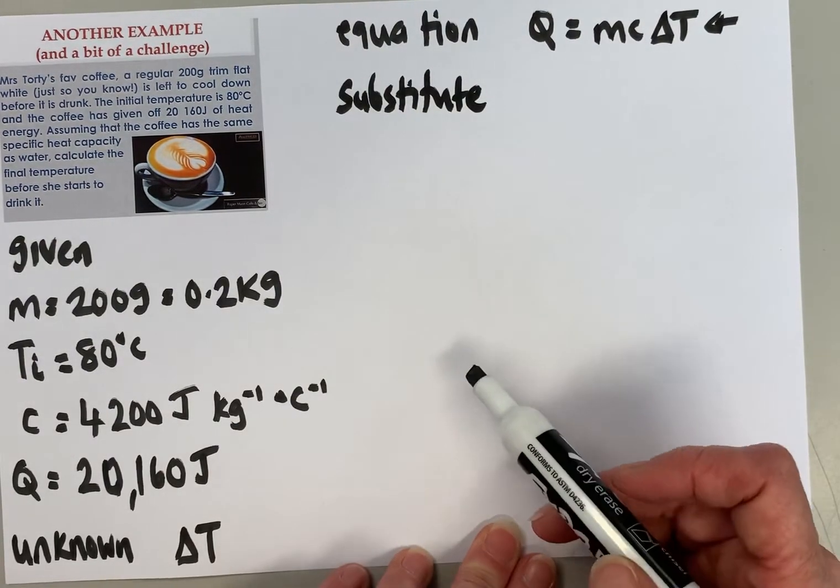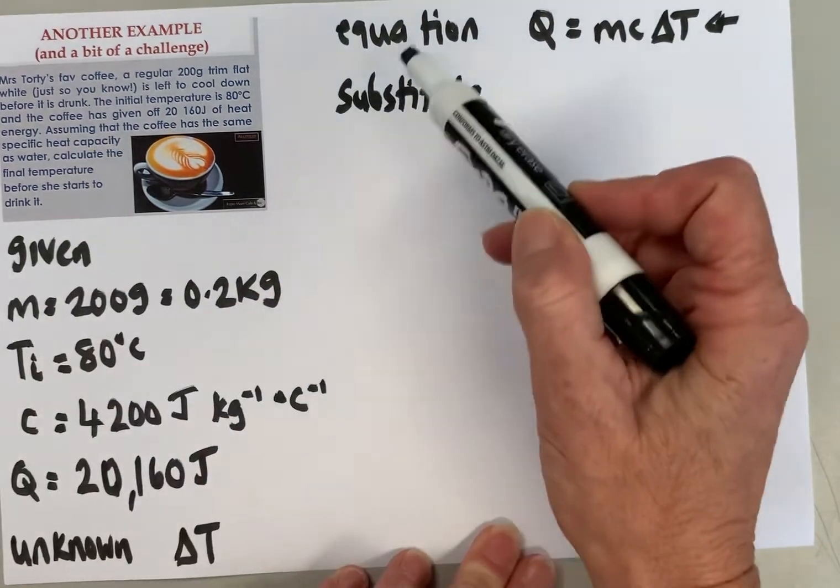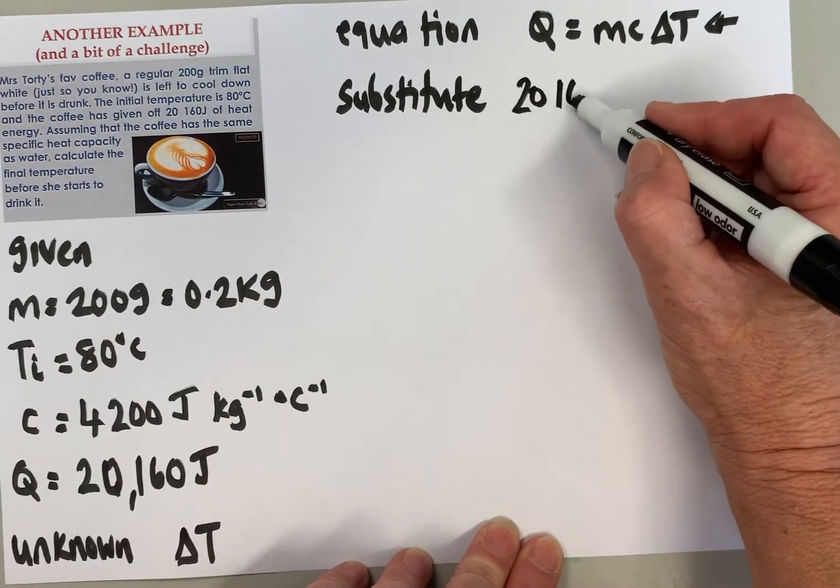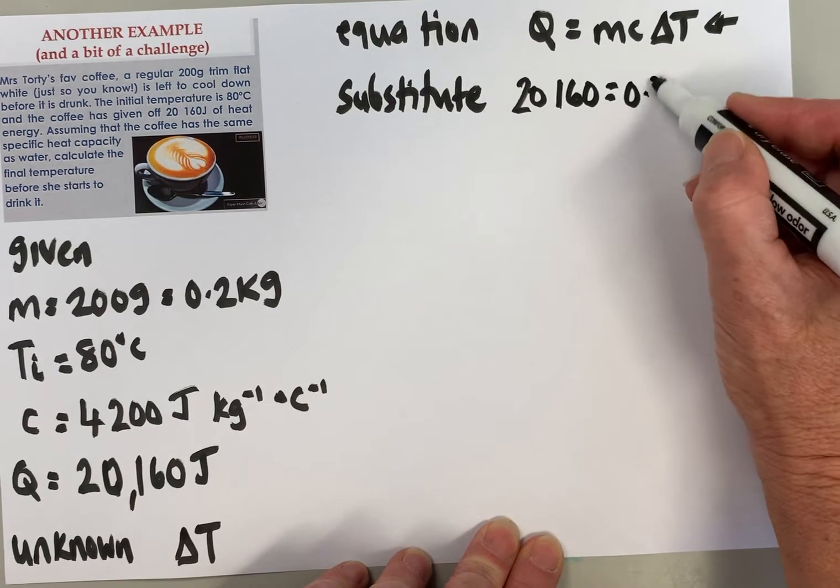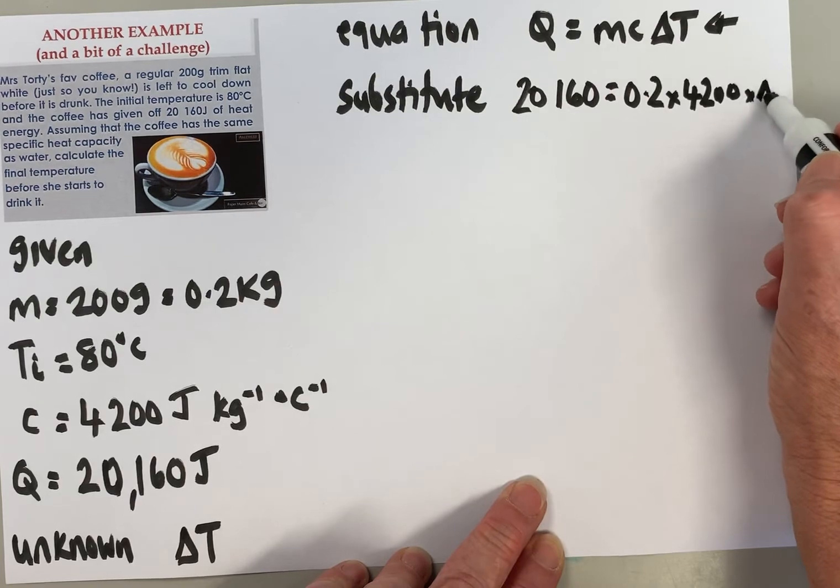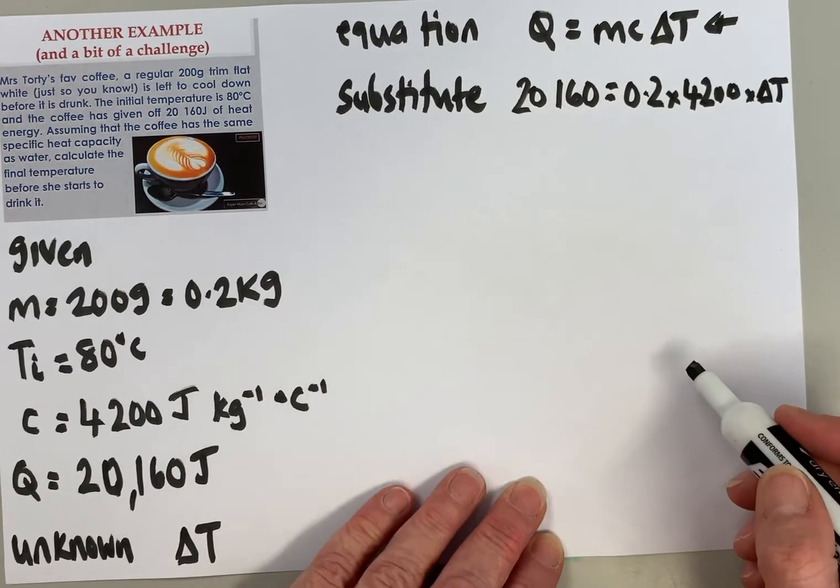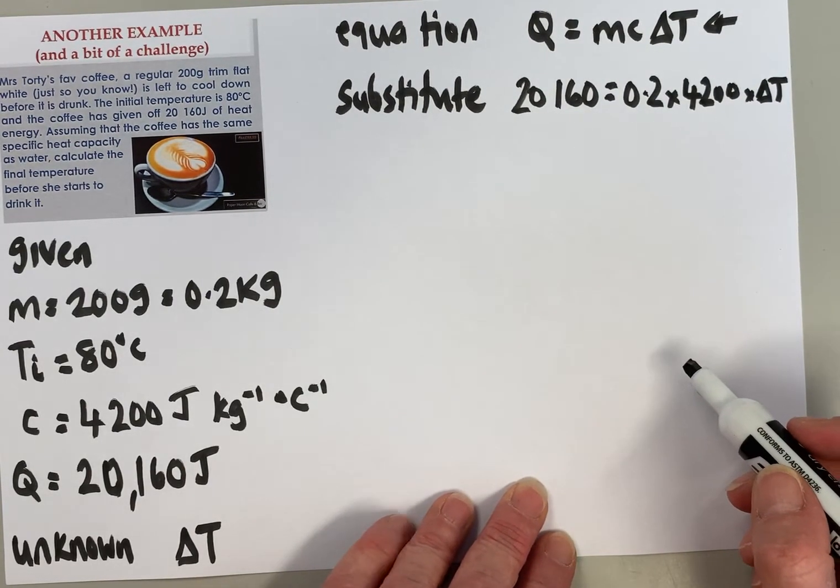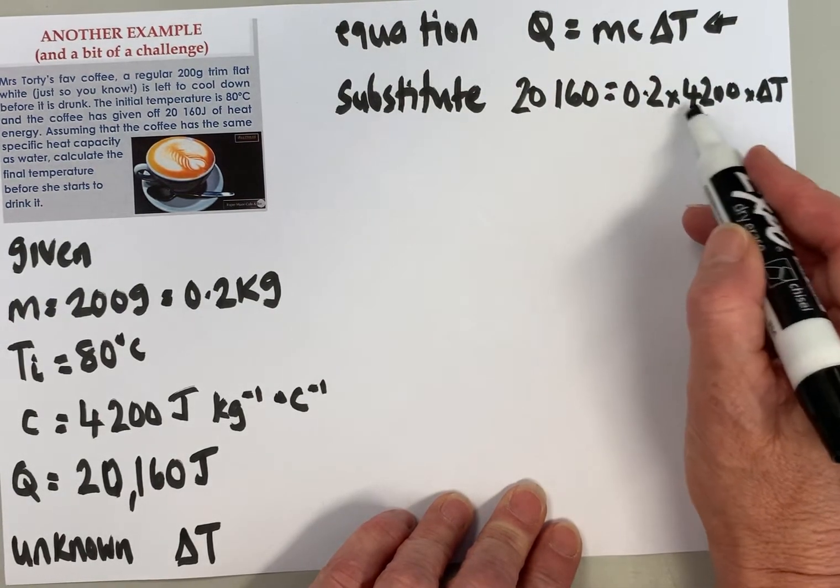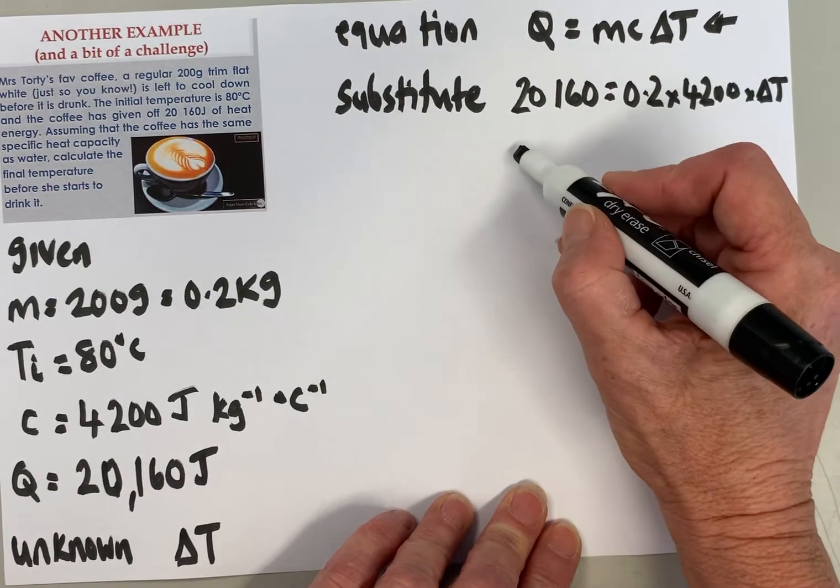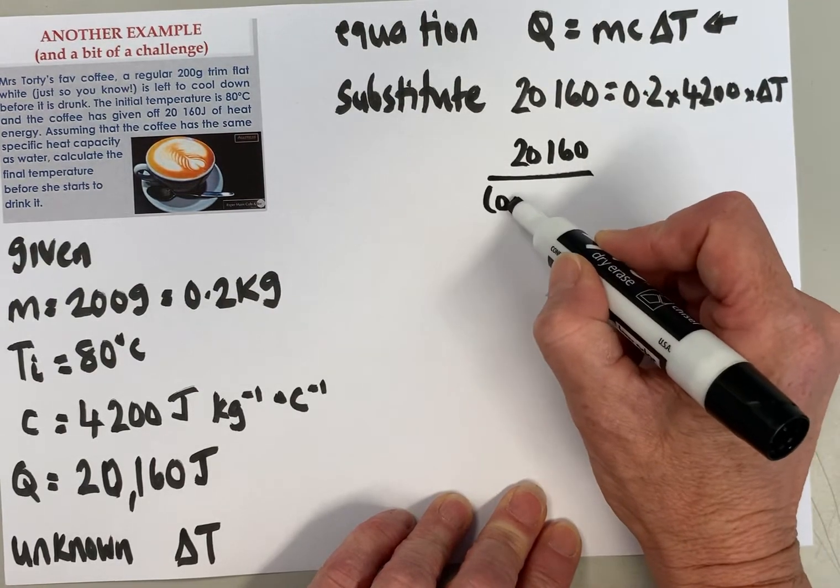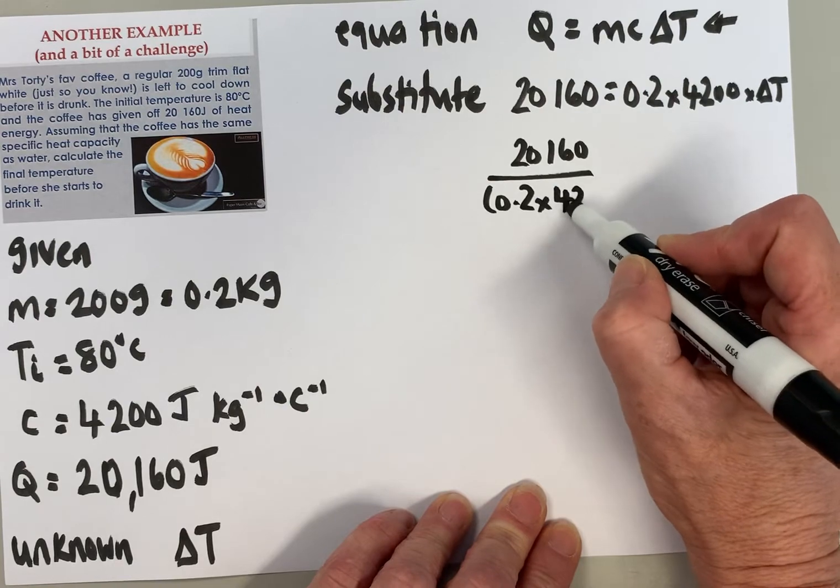We've got Given, Unknown, Equation, Substitute. So we've got 20,160 = 0.2 × 4200 × ΔT. If you're a brainbox in maths, you'll know that you need to divide by these two because they're multiplied on this side of the equation.